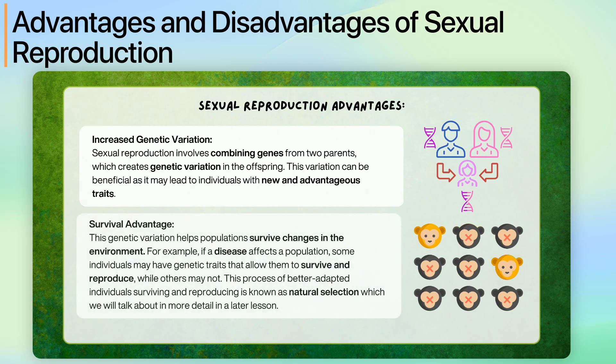Another benefit is survival advantage. This genetic variation helps populations survive changes in the environment. For example, if a disease affects a population, some individuals may have genetic traits that allow them to survive and reproduce, while others may not. This process of better adapted individuals surviving and reproducing is known as natural selection, which we will talk about in more detail in a later lesson.